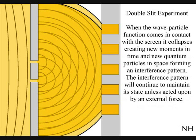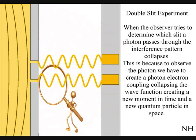When the observer turns on a detector to determine which slit a photon passes through, the interference pattern collapses. At that moment in time, the interference pattern disappears.